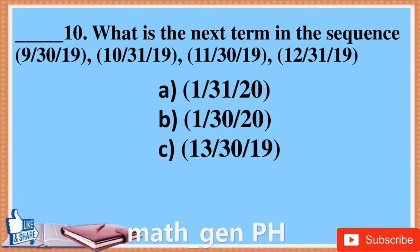Question 10: What is the next term in the sequence September 30th 2019, October 31st 2019, November 30th 2019, December 31st 2019? A. January 31st 2020, B. January 30th 2020, C. 13/30/19.